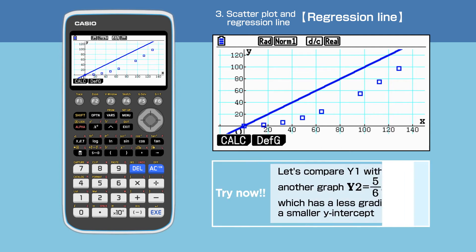We can change the values of gradient and the Y intercept, so that we can get the line closer to the points. Next attempt, we try the equation Y equals 5 over 6X minus 20 in Y2.